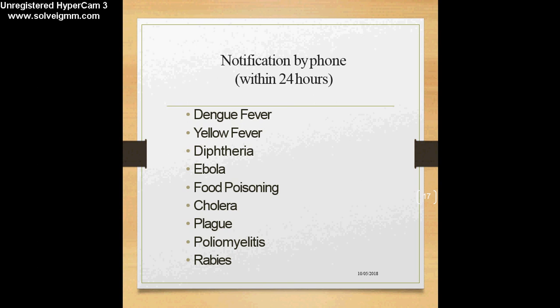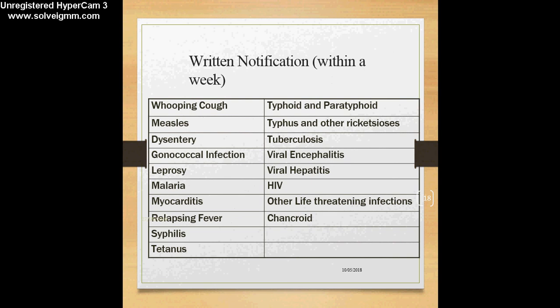The rest of the notifiable diseases have to be given by written notification to the district health office within a week — within 7 days — through written notification, with no requirement for a phone call. The point to remember is that this list of diseases may be modified in future. You are not required to memorize all the diseases; however, it is mandatory to remember the 9 diseases notified by phone, as their phone notification requirement reflects the urgency and public health threat they pose.